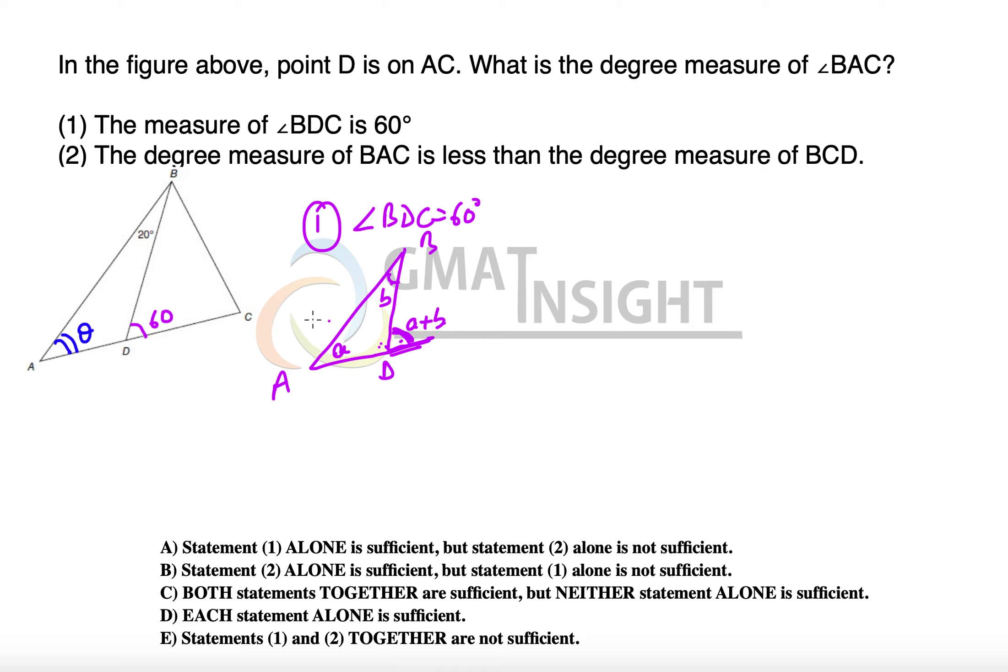And we are going to use this property. So we understand from the first statement that theta plus 20 degrees should be equal to 60 degrees, which means theta is equal to 40 degrees. So this statement alone is sufficient to answer the question. Now, we are left with only option A and B.